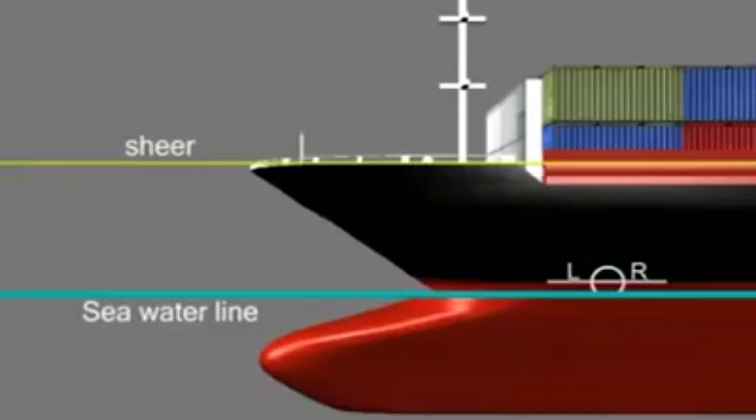Plimsol line allows one to know the freeboard. Freeboard is the vertical distance between the water line and the shear of the ship where water can enter the vessel.